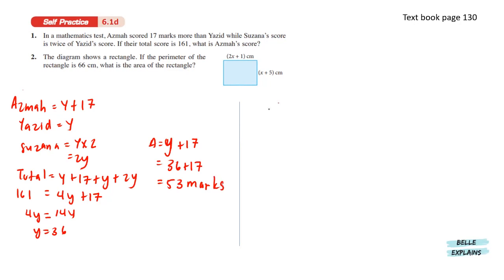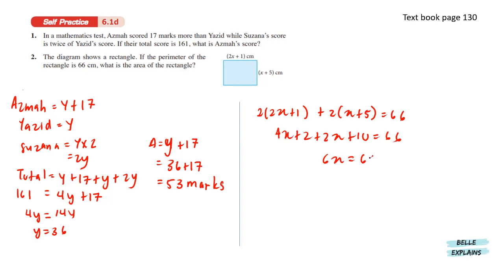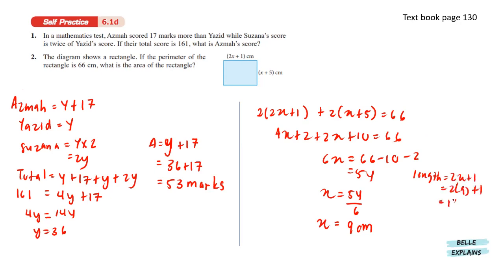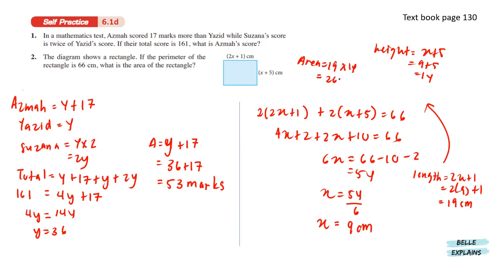Next, the diagram shows a rectangle. If the perimeter of the rectangle is 66 meters, what is the area? First, let's find the value of x. We have 2 times (2x plus 1) plus 2 times (x plus 5) equals 66, which gives us x equals 9 centimeters. So the length is 2(9) plus 1 equals 19 centimeters, and the height is 9 plus 5 equals 14 centimeters. The area is 19 times 14 equals 266 centimeters squared.